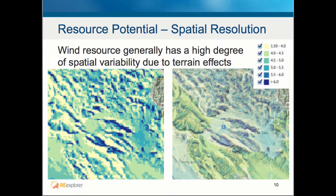When using resource data for finding potential, the spatial resolution of the data is important to consider. Wind resource, for example, generally has a high degree of spatial variability. This is due to the effects of hills, ridges, valleys, and plains on wind speed, meaning the higher resolution data available, the more likely the data will represent the changing landscape's effect on wind speed.